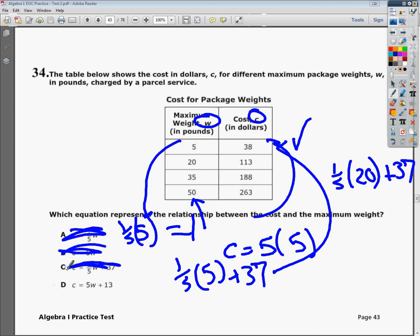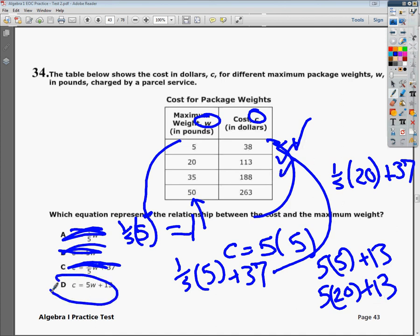But if I do D, it does work. So I'll do five times five, which gives you 25, plus 13, which of course gives you 38. In the next set, I would do five times 20 plus 13, and five times 20 is of course 100. Add 13 to it, you get 113, and then you do five times 35 and you add 13 to that, and you get 188. So all of them kind of work. I just check them off, so I can say with reasonable amount of confidence that my answer is D.